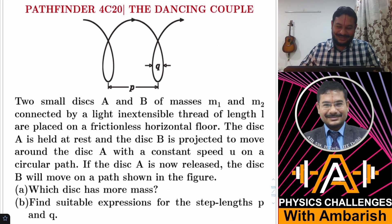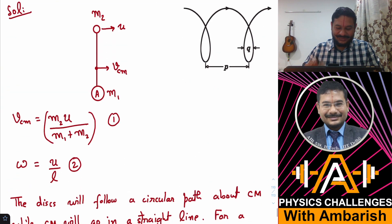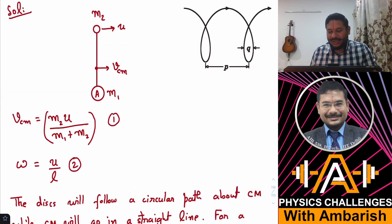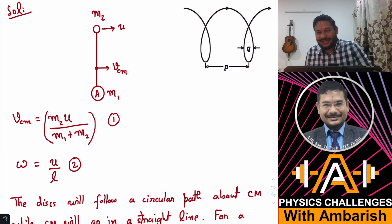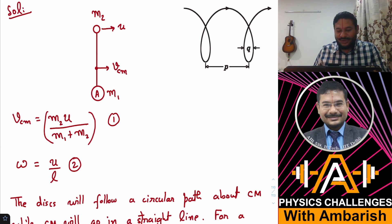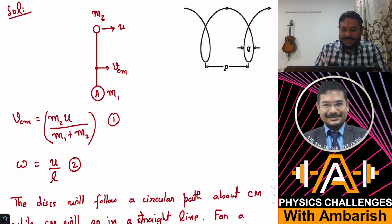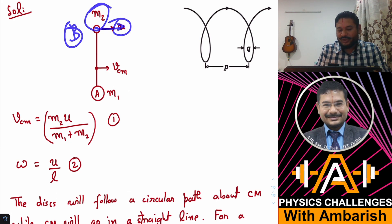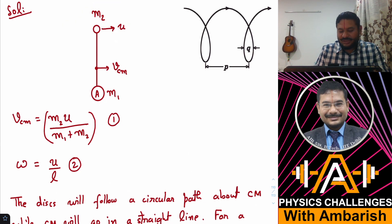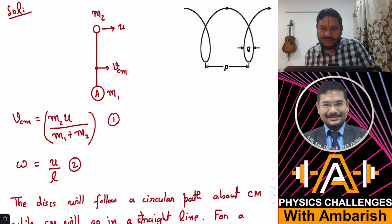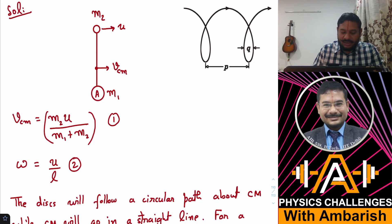Let's look at the analysis. First, I've calculated the velocity of center of mass C. m2 is the mass of disk B, which was projected with speed u, so the velocity of the center of mass is m2·u divided by (m1 + m2), from the standard formula m1·v1 + m2·v2 divided by m1 + m2.